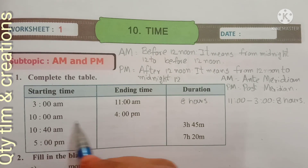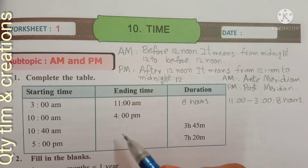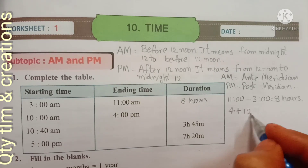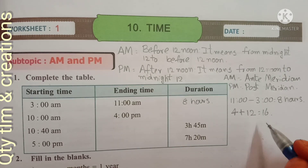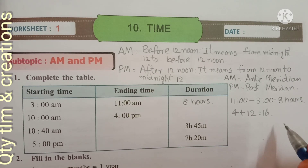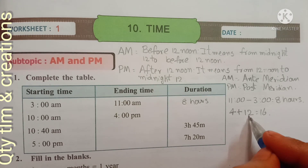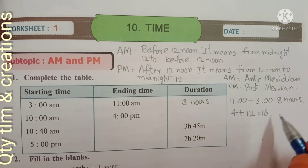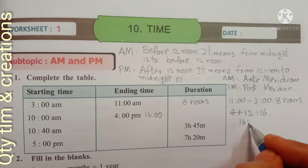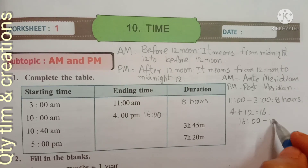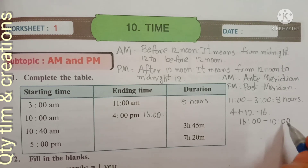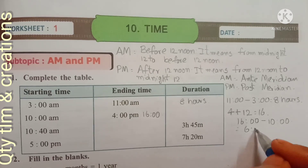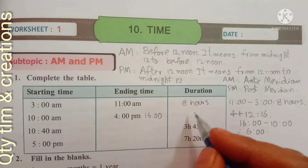Next: starting time is 10 AM, ending time is 4 PM. We have to convert 4 PM by adding 12: 4 plus 12 equals 16 hours. With a 12-hour clock, PM time is found by adding 12 hours to get 24-hour time. So the duration is 16 minus 10, which equals 6 hours.